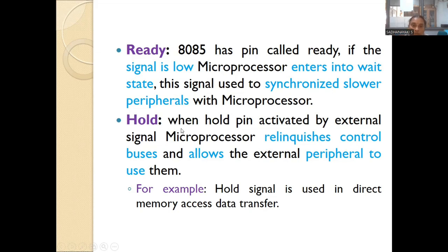The hold signal: when the hold pin is activated by an external signal, the microprocessor releases its control buses and allows the external peripheral to use them. This is mainly used during DMA (direct memory access). The hold signal is given to the microprocessor requesting use of its buses. When the signal comes from an external device, the microprocessor relinquishes its control buses and allows the external peripherals to use them.